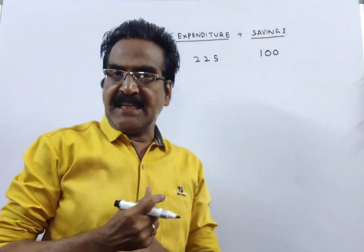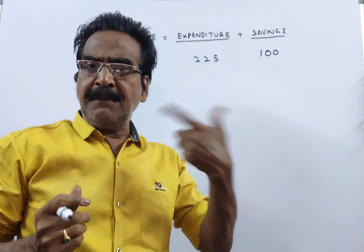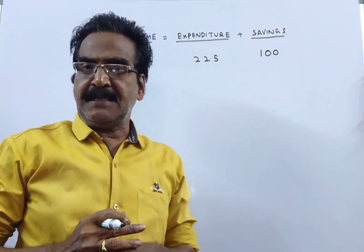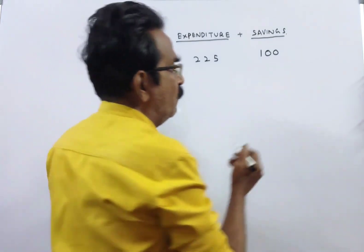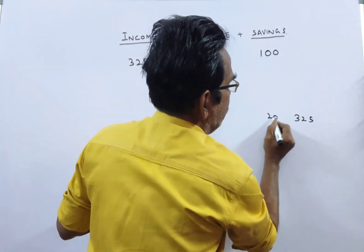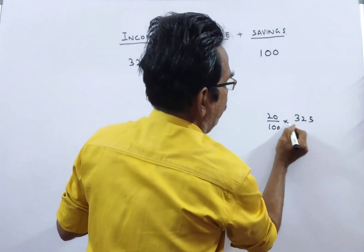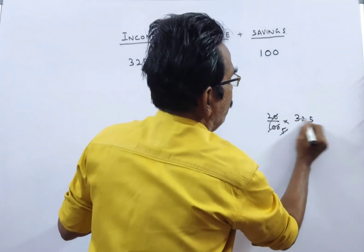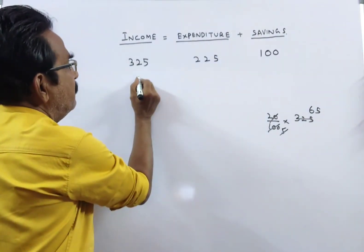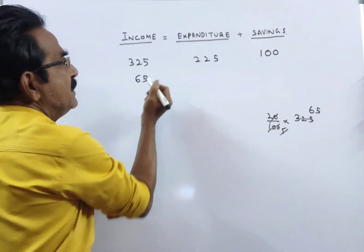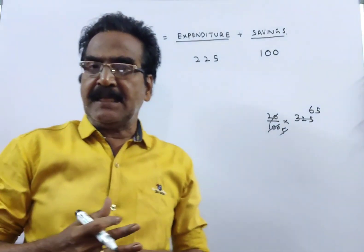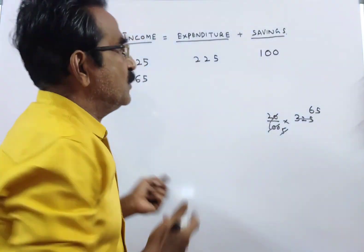Now, it is given that income is increased by 20%. What is 20% of 325? That is 65. So his income is increased by 65.